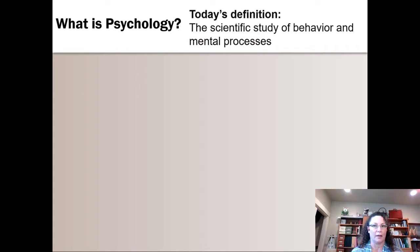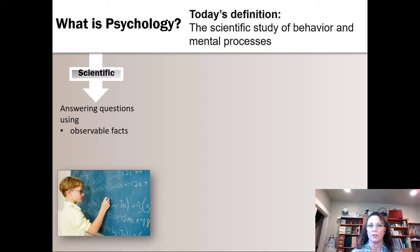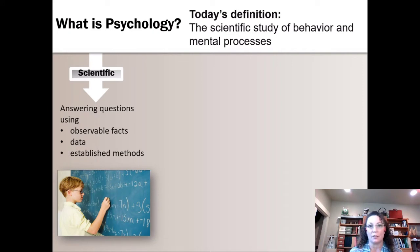That seems like it needs a little breaking down. Psychology is a science. What that means when we say that an endeavor is a science is that we're going to answer our questions using observable facts, things that other people can see and verify. That independent verifiability is really the critical factor in science. We're going to use data to draw our conclusions, use established research methods, and follow the normal protocol that scientists in all fields follow.